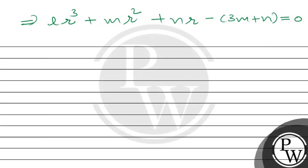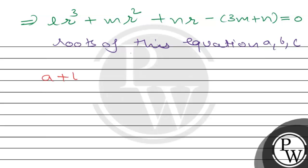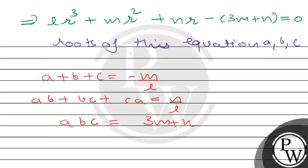Since r can be a, b, or c and the points are collinear, a, b, c are the roots of this cubic equation. Applying Vieta's formulas: a+b+c = -M/L, ab+bc+ca = N/L, and abc = (3M+N)/L.